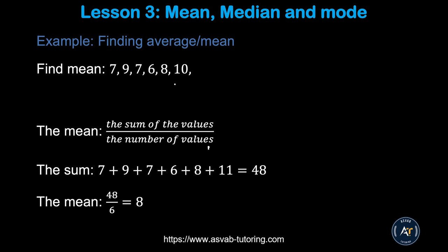The first thing we learn here is how to find Average or Mean. Average and Mean are the same thing. If you want to find the Mean or Average, you have to add the numbers. There are a few random numbers: 7, 9, 7, 6, 8, and 10. You add them up — that gives you 48. Divide by 6, that gives you 8. So the correct answer is 8.